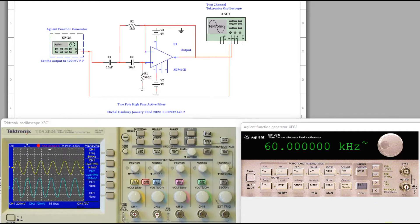At 60 kilohertz you'll notice that the input is still the same value but our output has dropped to 120 millivolts.